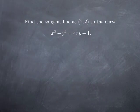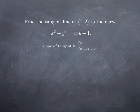Let's look at a second example. We want to find the tangent line at the point (1, 2) to the curve x³ + y³ = 4xy + 1. Note that if x = 1 and y = 2, we get 1 + 8 on the left and 4·1·2 + 1 = 9 on the right. Therefore the equation is satisfied, confirming (1, 2) is on the curve. We'll use implicit differentiation to find the slope, which is dy/dx at x = 1 and y = 2.